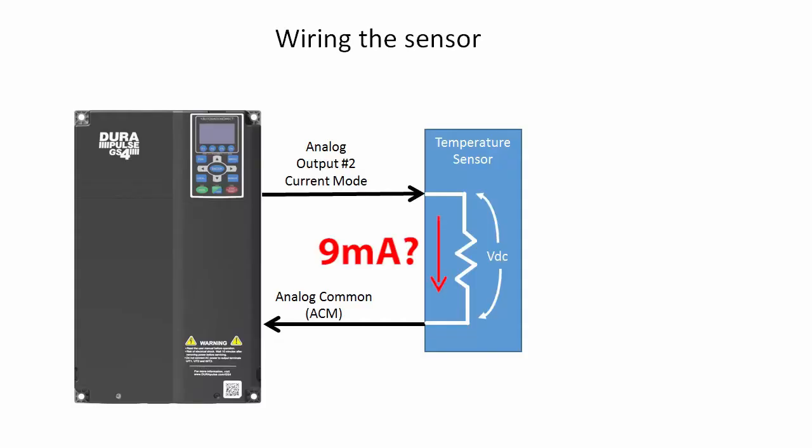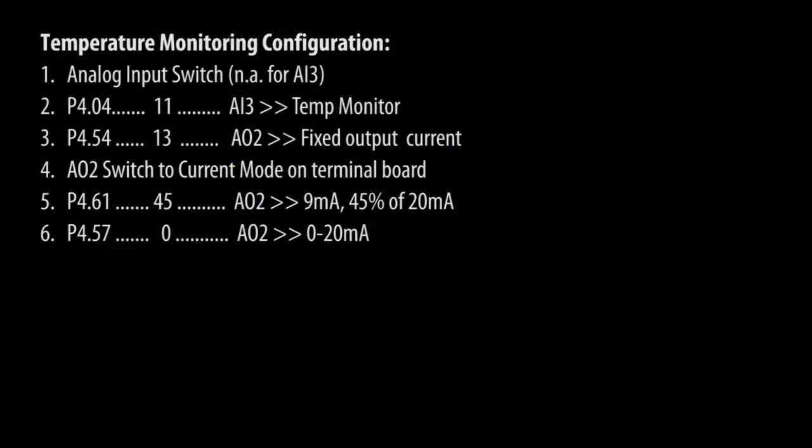Why did we choose 9 mA? Because it's enough to reliably drive the RTD without having to worry about the RTD heating up and throwing off our temperature measurements. OK, our hardware is wired and configured. Now let's set up the fault conditions.